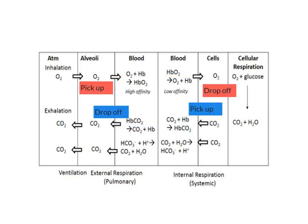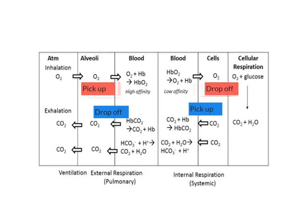Think of hemoglobin as a taxi. At the alveoli during external respiration, it picks up the oxygen and transports it via the blood, then drops off the oxygen at the cells. The taxi doesn't want to go back empty, so as it drops off oxygen, the hemoglobin picks up CO2 and transports it back, dropping it off at the lungs so it can be exhaled. So: pick up oxygen, drop it off, pick up CO2, drop it off.